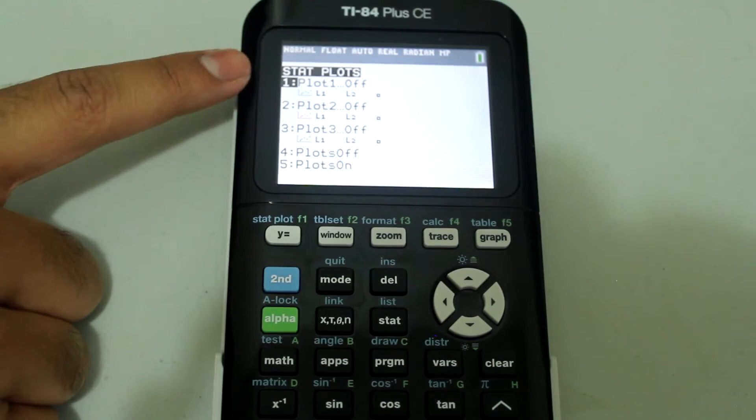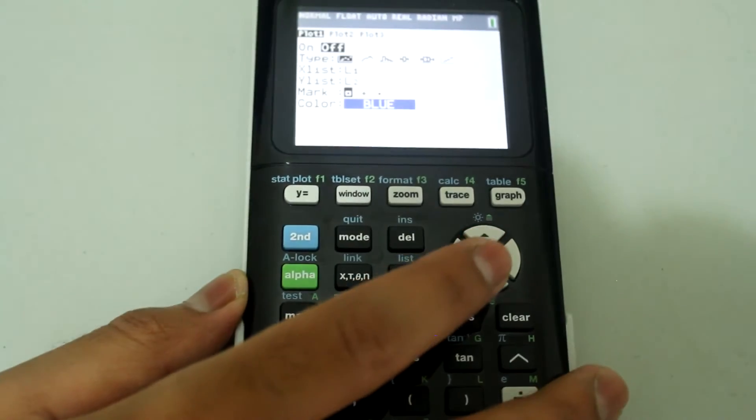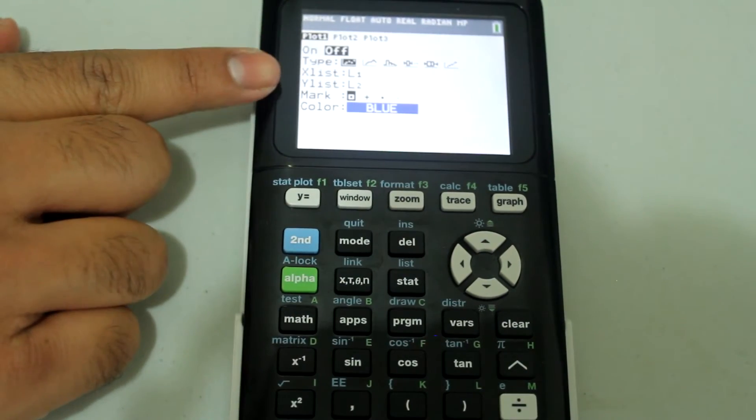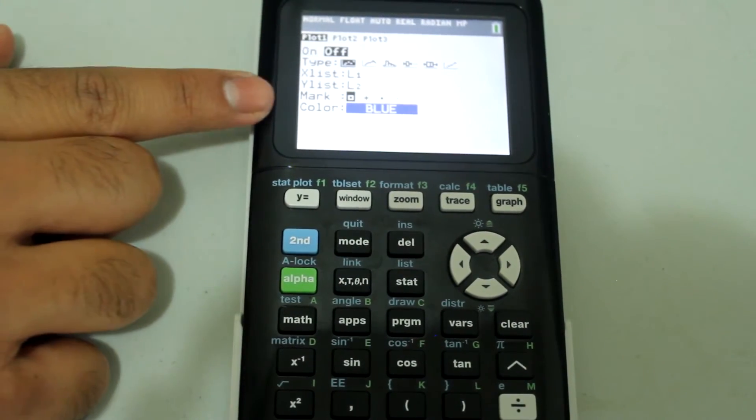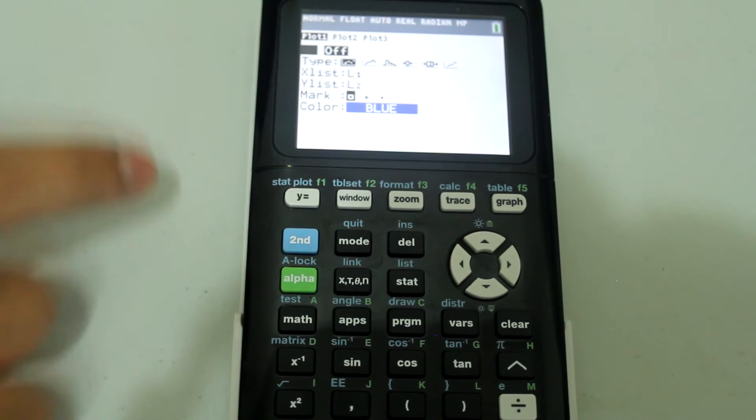I'm going to go to plot 1, so just press enter. You notice that the x list is L1 and the y list is L2. I just want to see that.